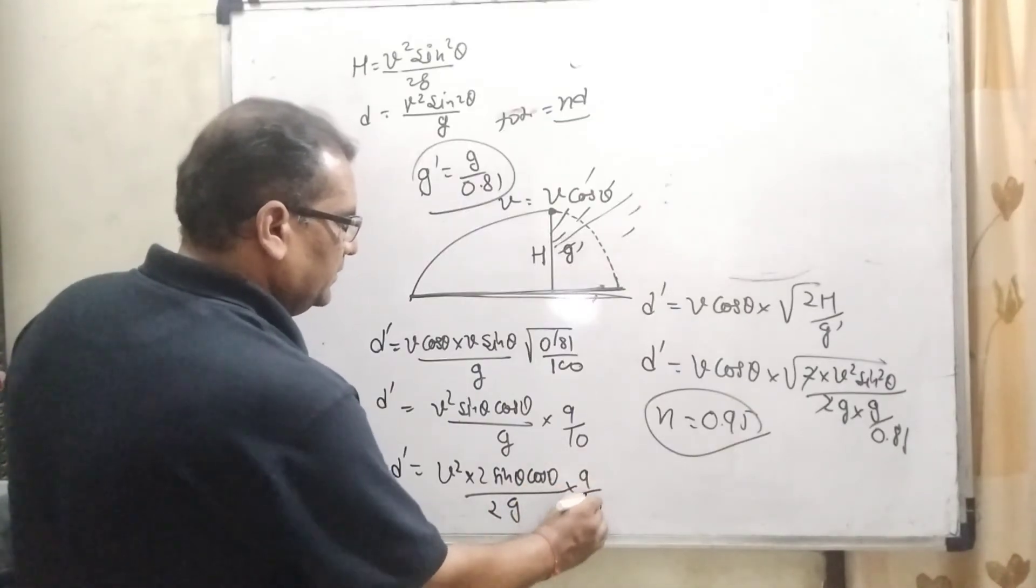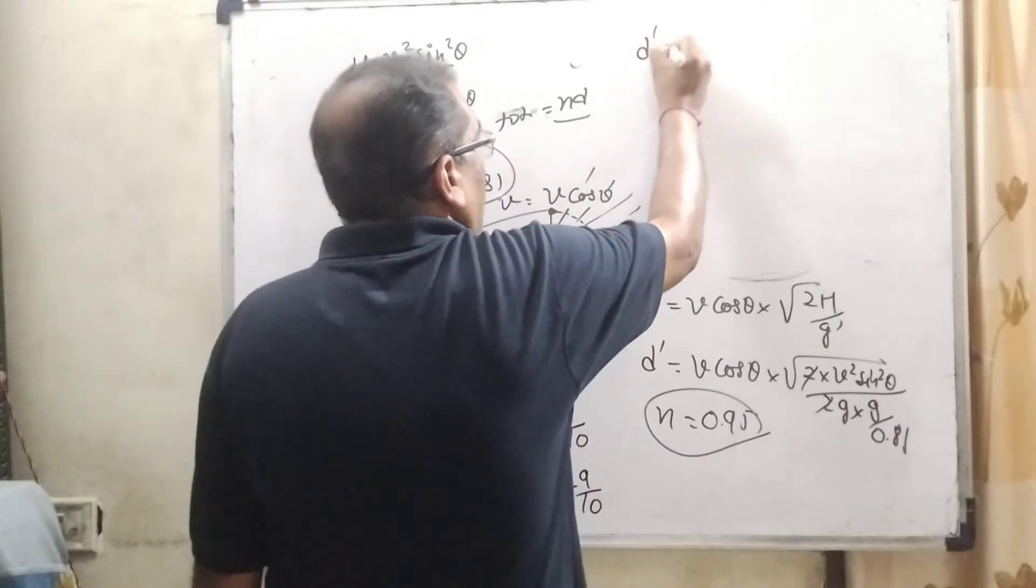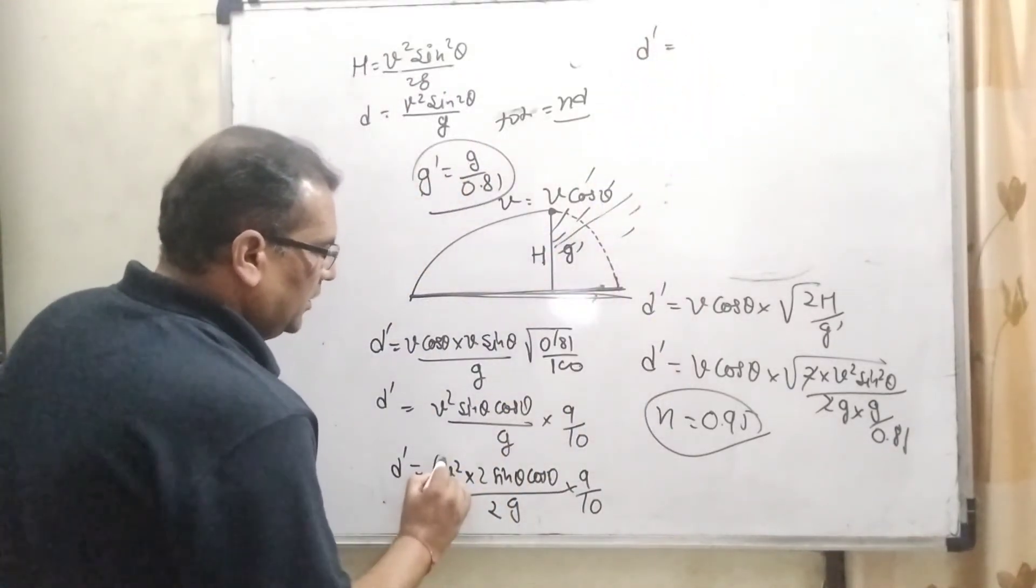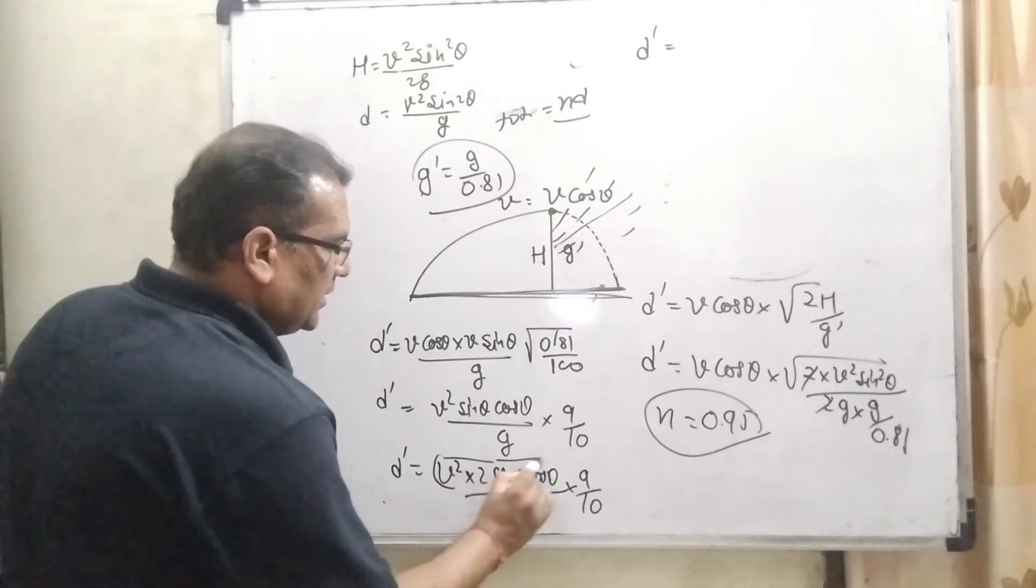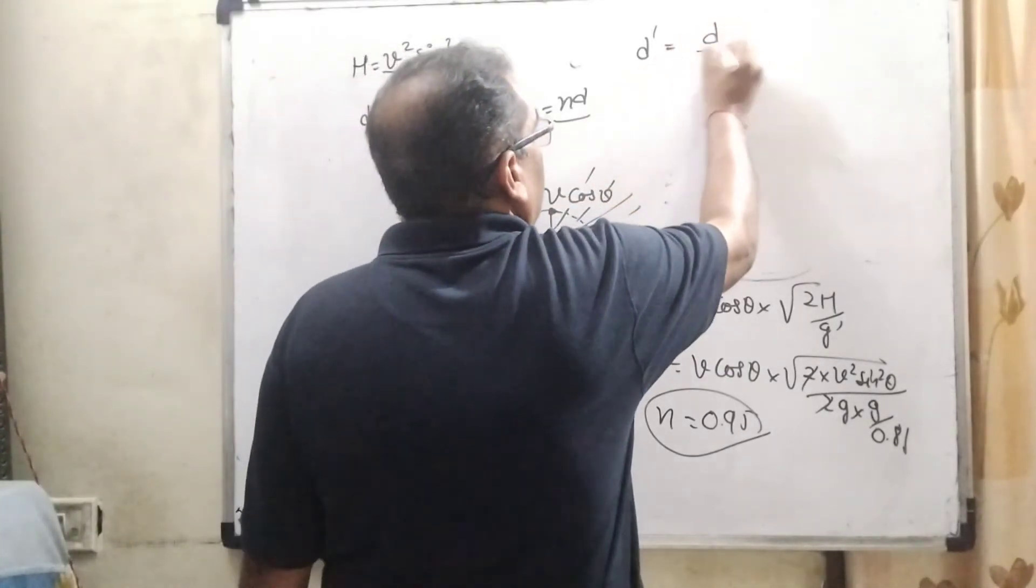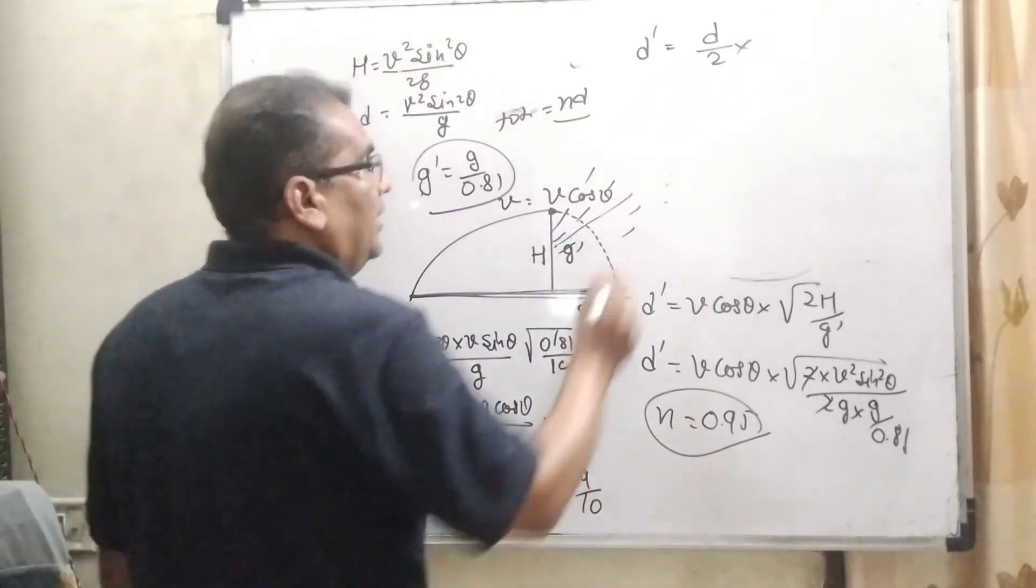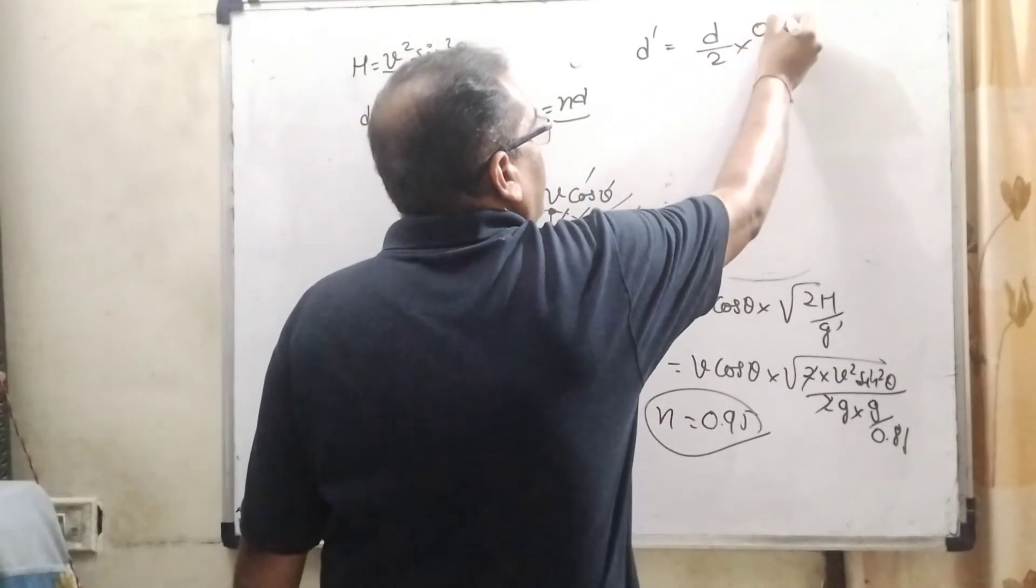Now it becomes D dash equals this value V squared 2 sine theta cos theta upon g, it becomes D by 2. And this 9 by 10 can be written as 0.9.